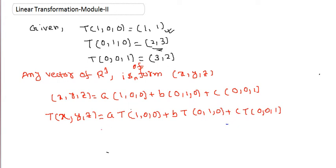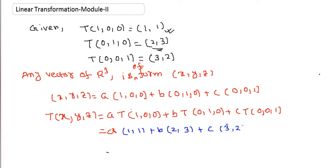We know the values: T(1,0,0) = (1,1), T(0,1,0) = (2,3), T(0,0,1) = (3,2). So T(x,y,z) = a·(1,1) + b·(2,3) + c·(3,2). Now we need to find the values of a, b, and c. Pause the video and work it out yourself.